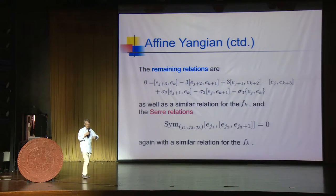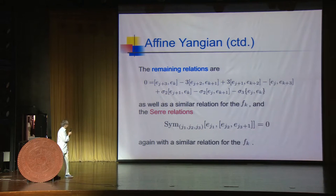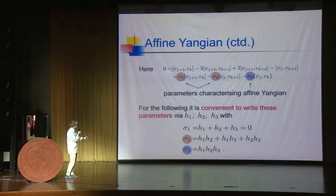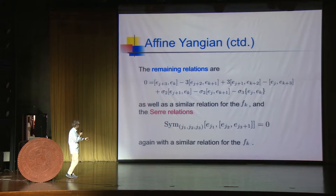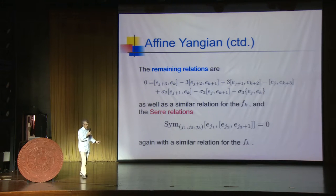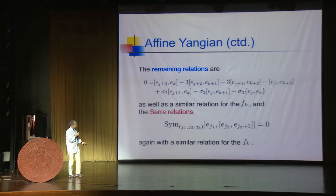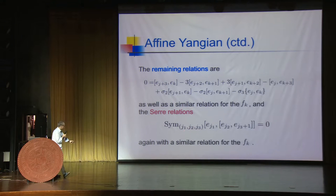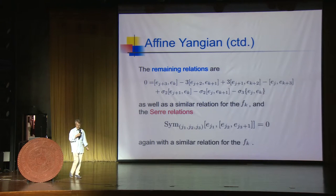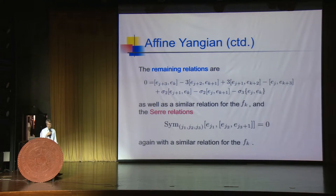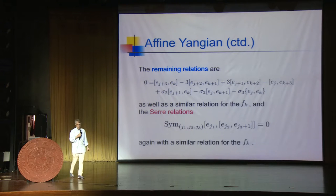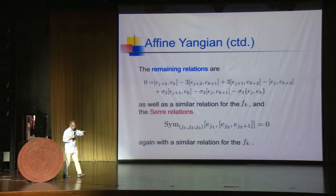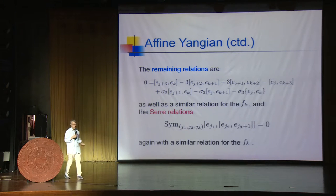There are additional relations characterizing the affine Yangian: a relation involving two E's of the same sort as the Ψ-E relation, a similar relation for the F's, and finally two Serre-like relations giving repeated commutators of three E's, symmetrized over j_1, j_2, j_3 but with j_3 shifted by plus 1, which is non-trivial. These are set to zero, and again there is a similar relation for the F's. This is the affine Yangian of affine GL(1) — there is a more conceptual way to describe it, but this is the hands-on definition.